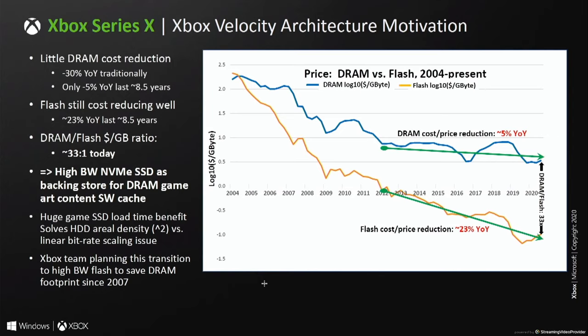This slide describes the motivation for the Xbox Velocity Architecture. The biggest issue is that DRAM has had problems shrinking with the processor for many years, starting around 2008–2009. Fortunately, Flash and storage has continued to cost-reduce very well, enabling it to subsume the hard drive, providing the needed bandwidth for refilling the DRAM cache. Hard drives are also doomed to increasingly poor load times due to the inherent square-term density versus linear bitrate problem. This is fixed with the NVMe SSD and hardware-software acceleration of storage.